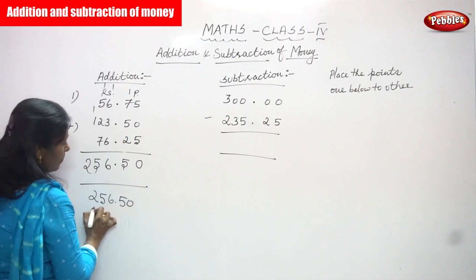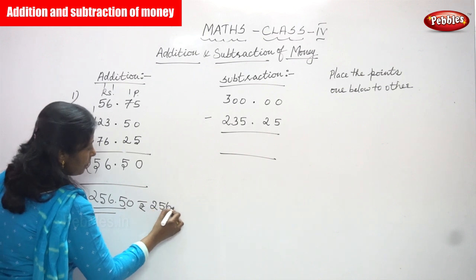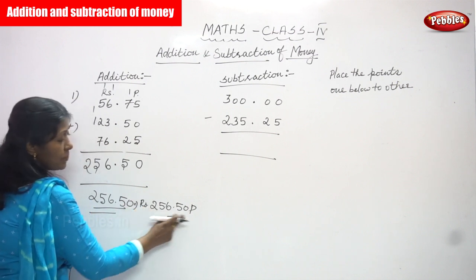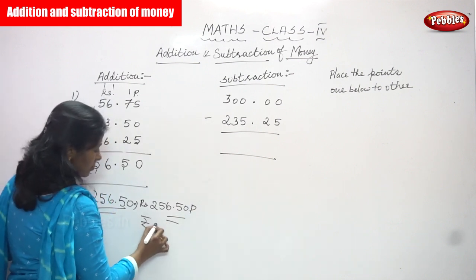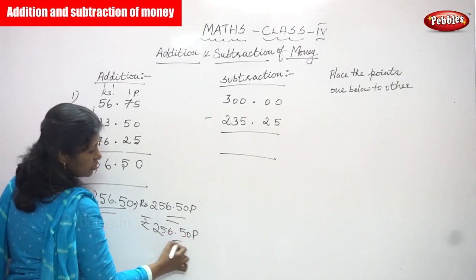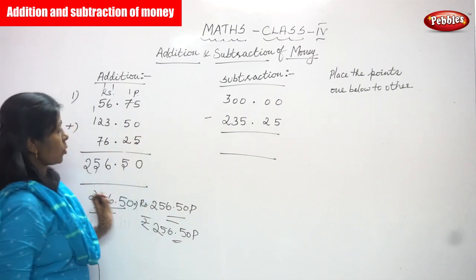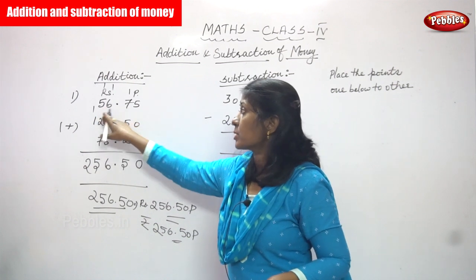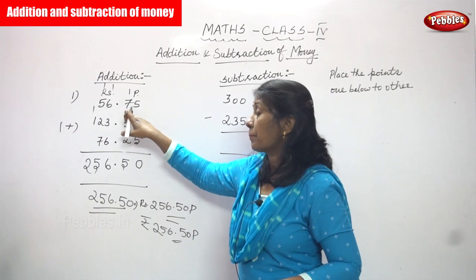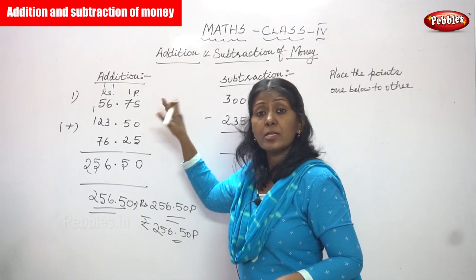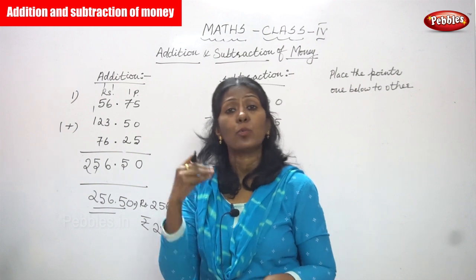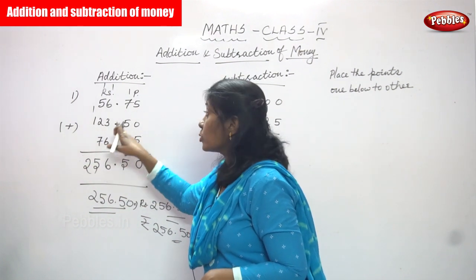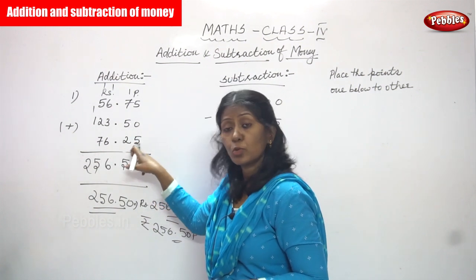The answer is 256.50 — that means 256 rupees 50 paise. You can write it as rupees 256.50 or 256 rupees 50 paise — both are correct. This is the addition method. Remember to place the decimal points one below the other. This is the ones and tens place; 56 is rupees and 75 is paise. You must write and place the point very carefully: 56.75, then 123.50, then 76.25.